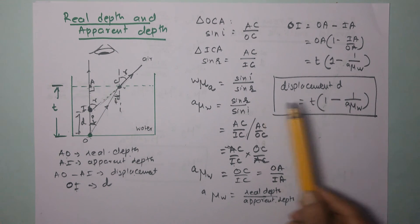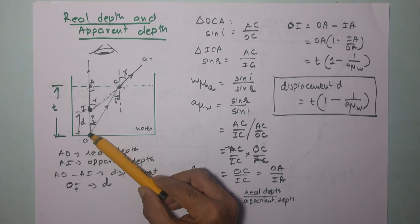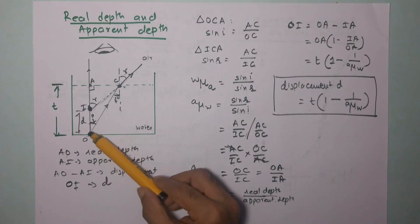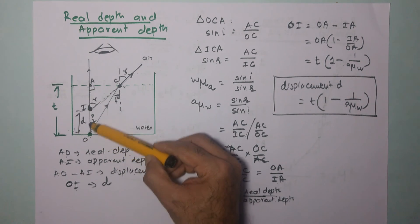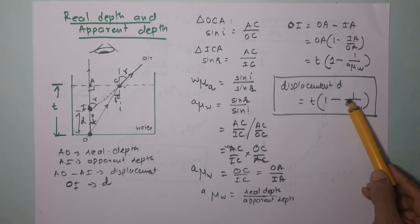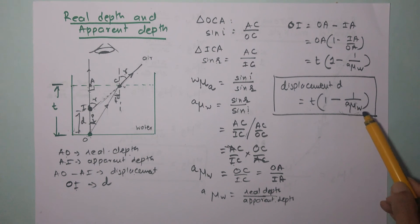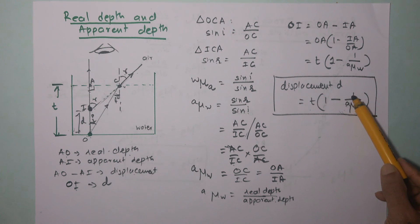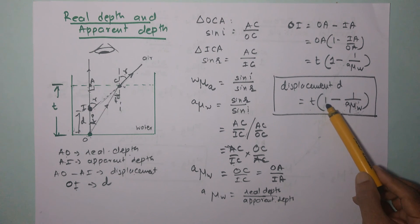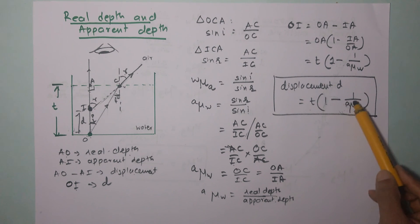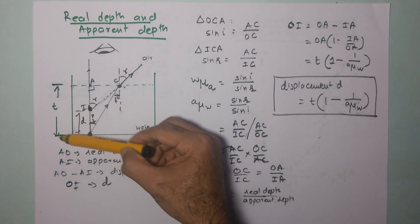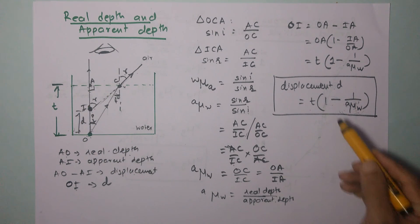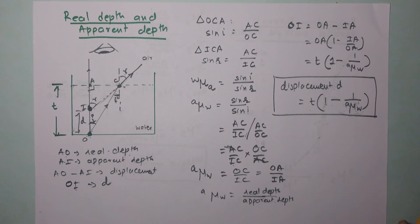In this equation, displacement D — how much the object appears to be raised — depends upon thickness. So the greater the thickness of the medium, the more we see this effect. It also depends upon the refractive index: as the refractive index increases, the term 1 upon refractive index becomes smaller, so you subtract a smaller quantity from 1, giving a larger value, and therefore D increases. So a larger refractive index causes more displacement.